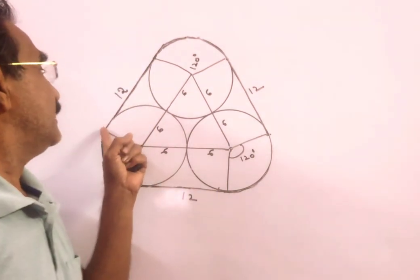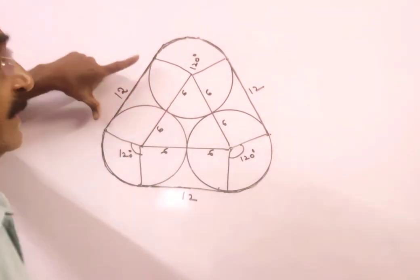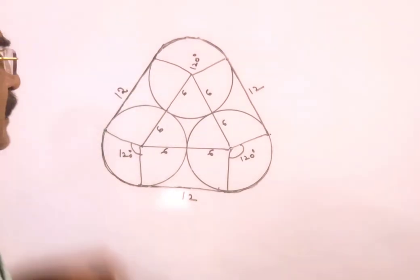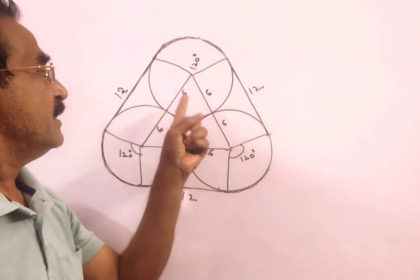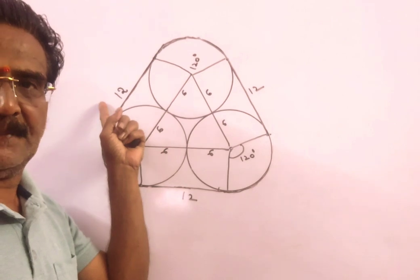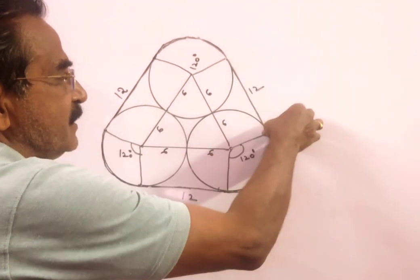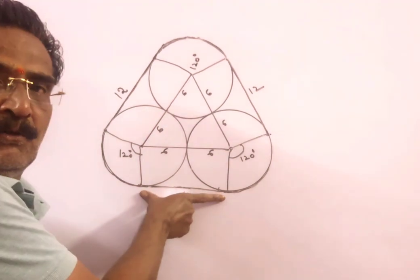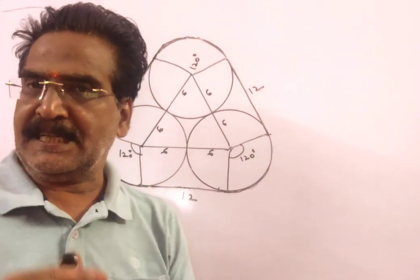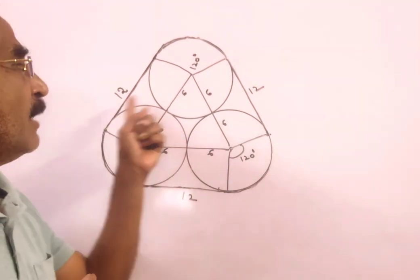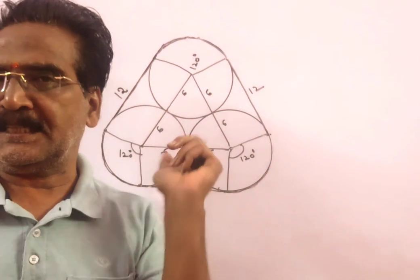See friends, this length is 12 cm because the radius is 6, 6 plus 6 is 12 cm. In the same way, this is also 12 cm and same way this is also 12 cm. That is straight line portion of 12 plus 12 plus 12, 36.